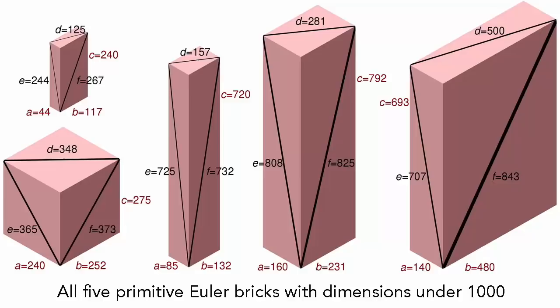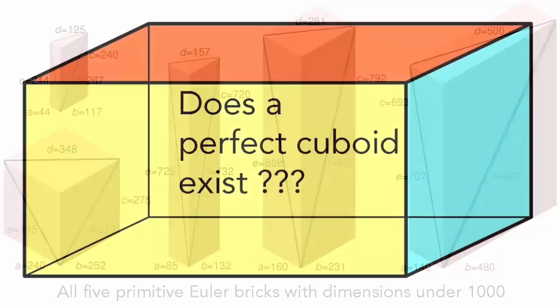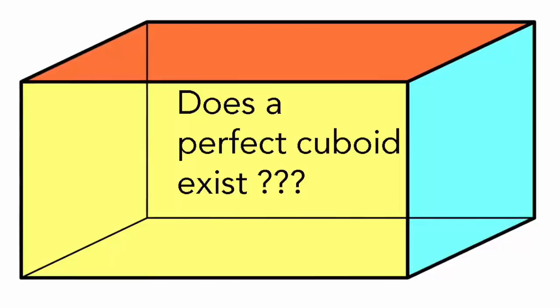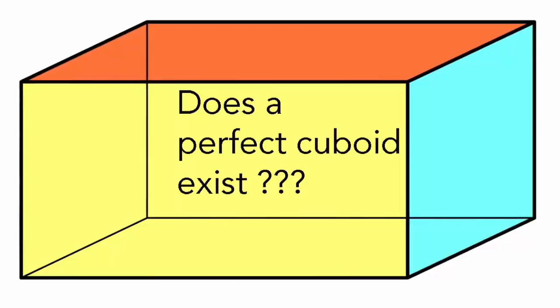The smallest Euler brick was discovered not by Euler himself, but by a contemporary of his, the German mathematician Paul Halcke, in 1719. It has edges of length 44, 117, and 240, and face diagonals of length 125, 244, and 267. There are infinitely many Euler bricks, and various methods are known for generating them, but the perfect cuboid, or perfect Euler brick, where the spatial diagonal must also be of integer length, has so far proved a stumbling block.